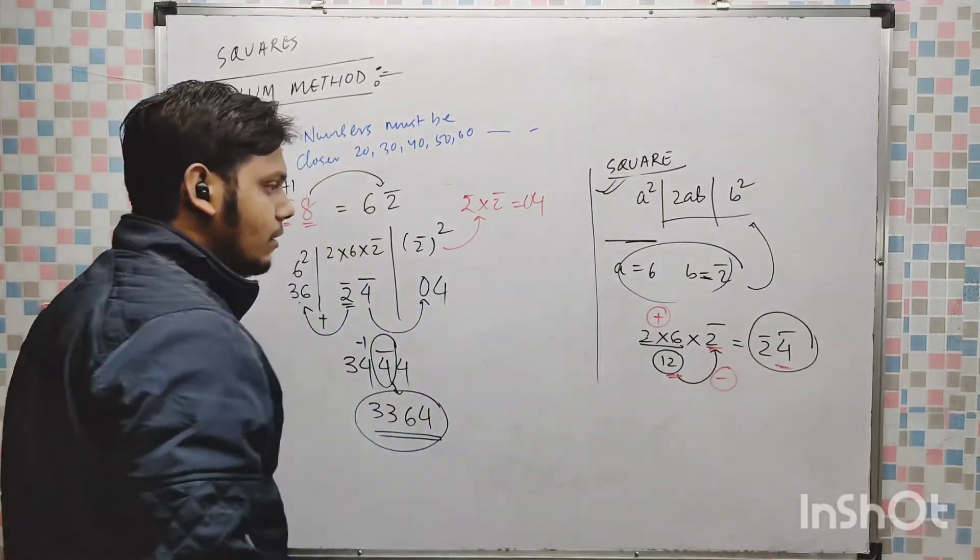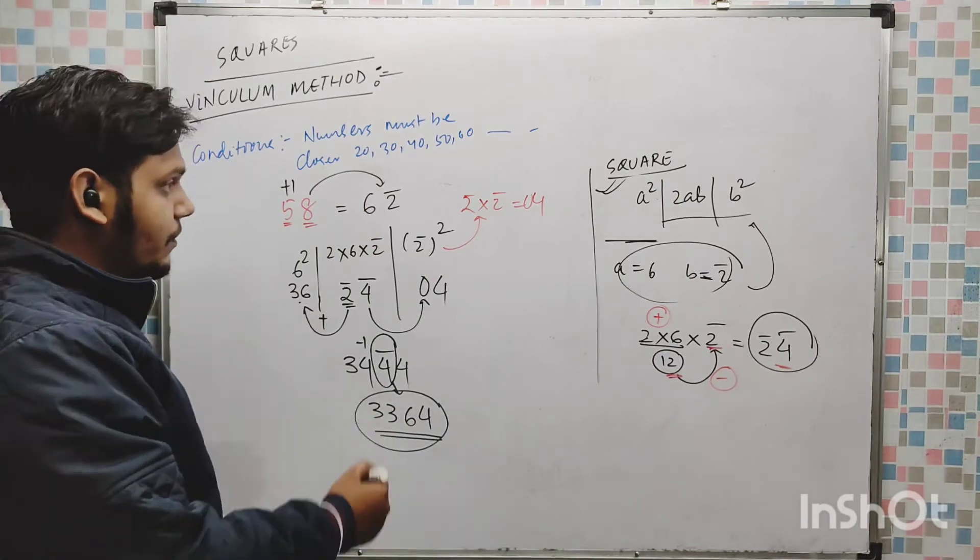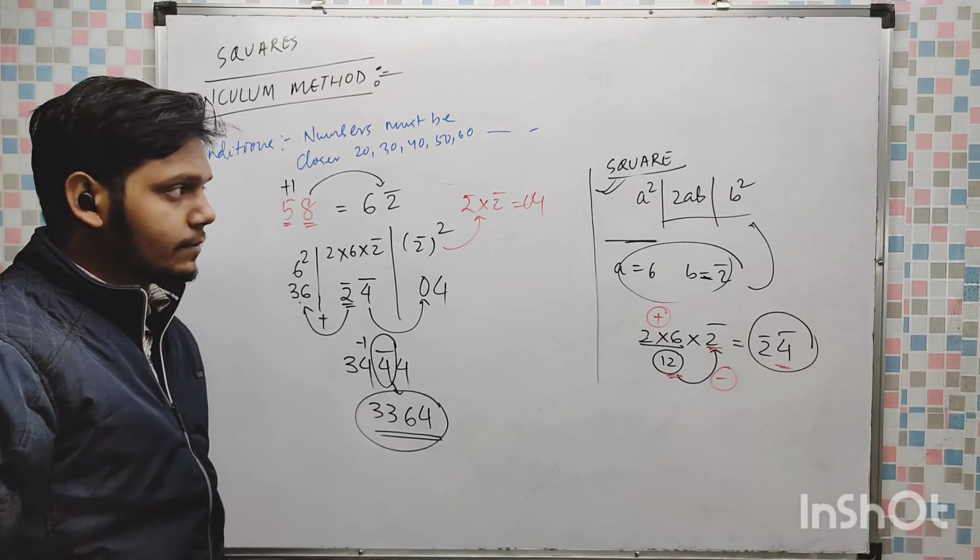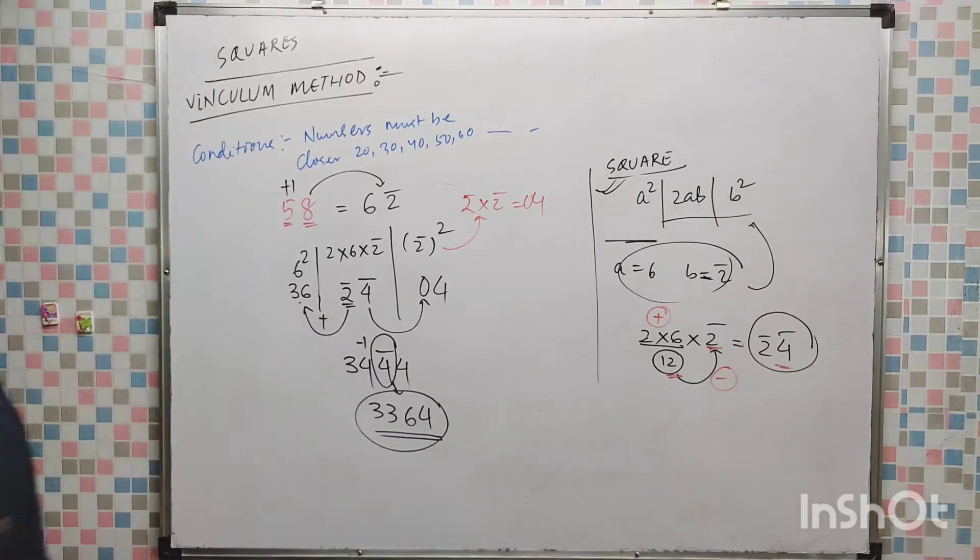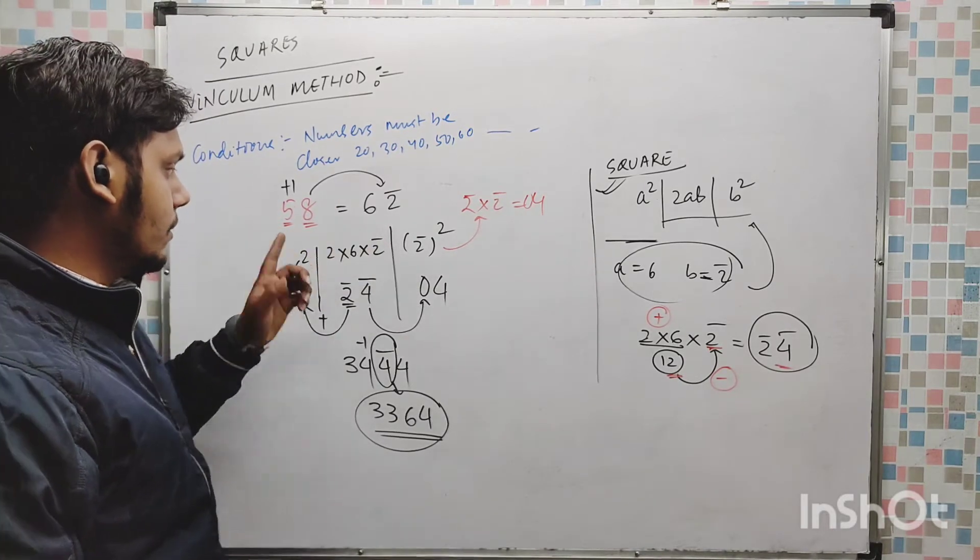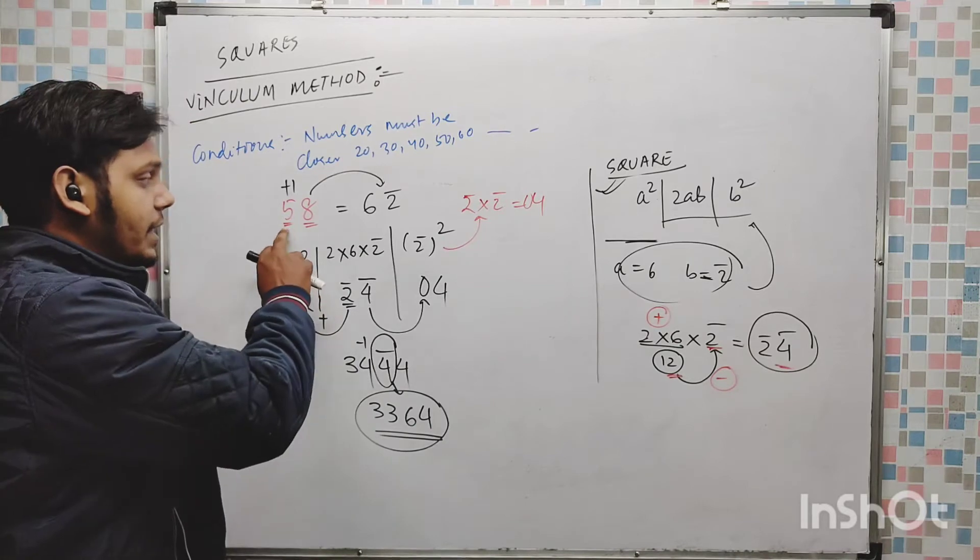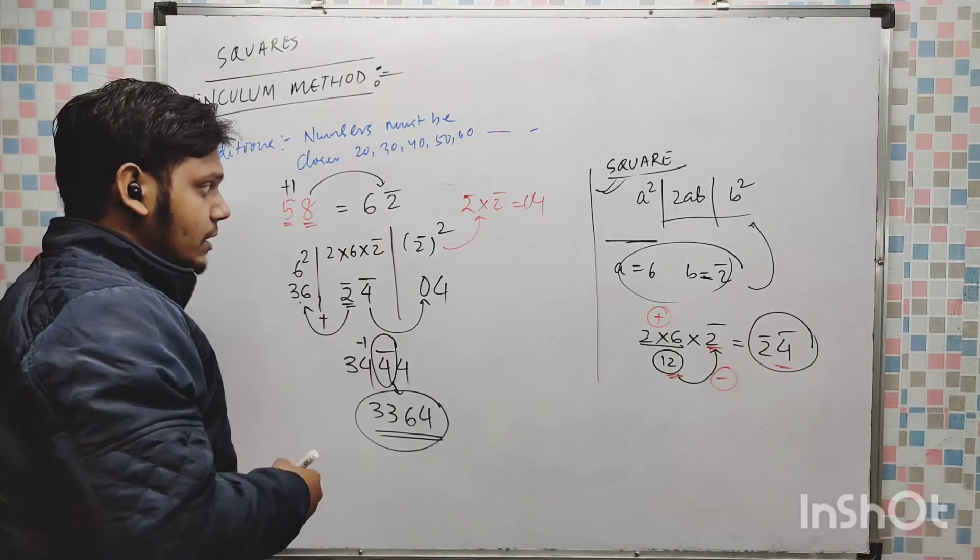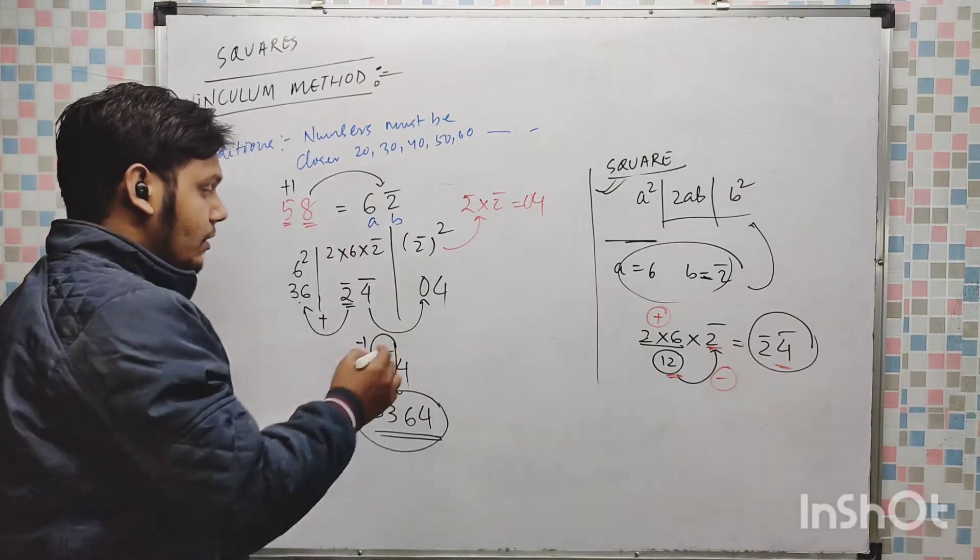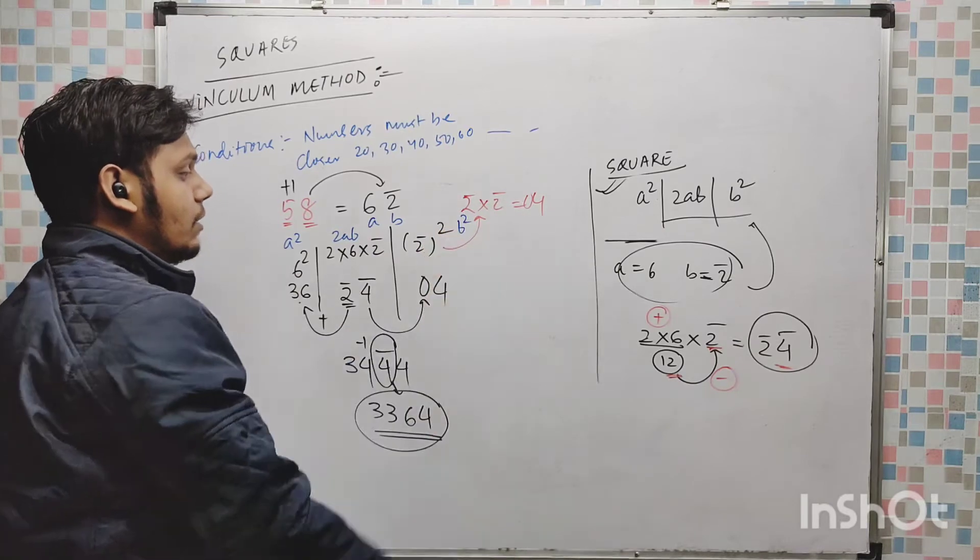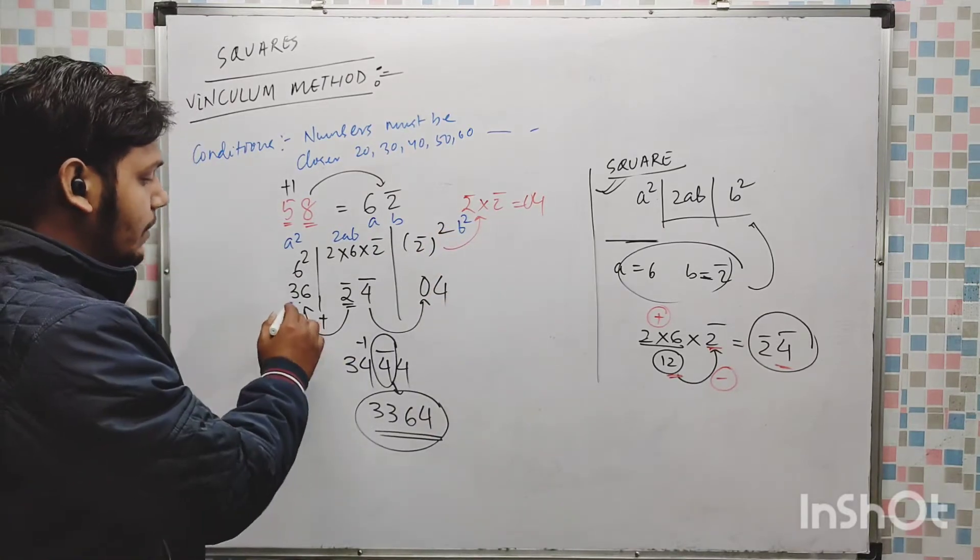So by using this formula you can find out the square of 58. I will take the screenshot in order to get it properly. So first I found the vinculum of this number, therefore I got A and B. Here this is A, this is B. Now A square, 2AB, and then B square.